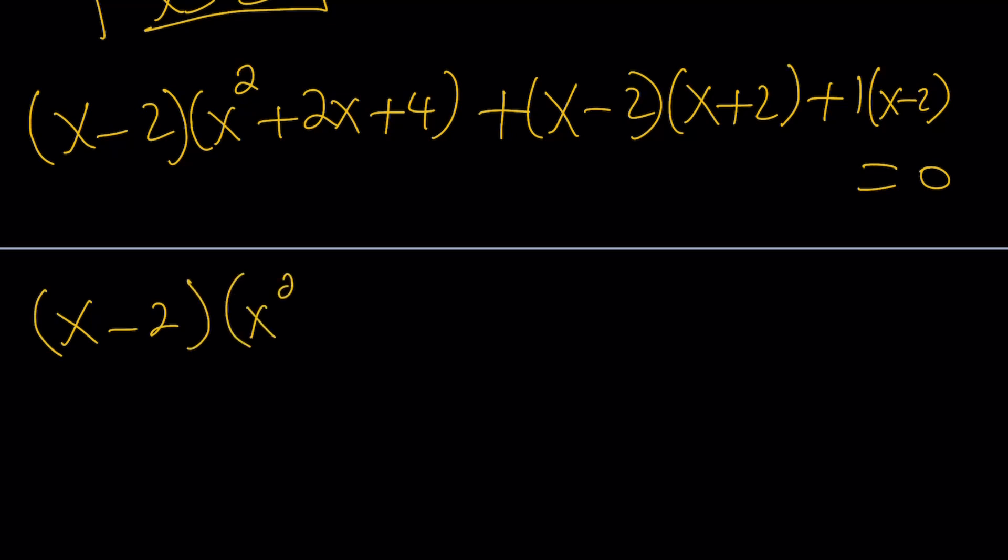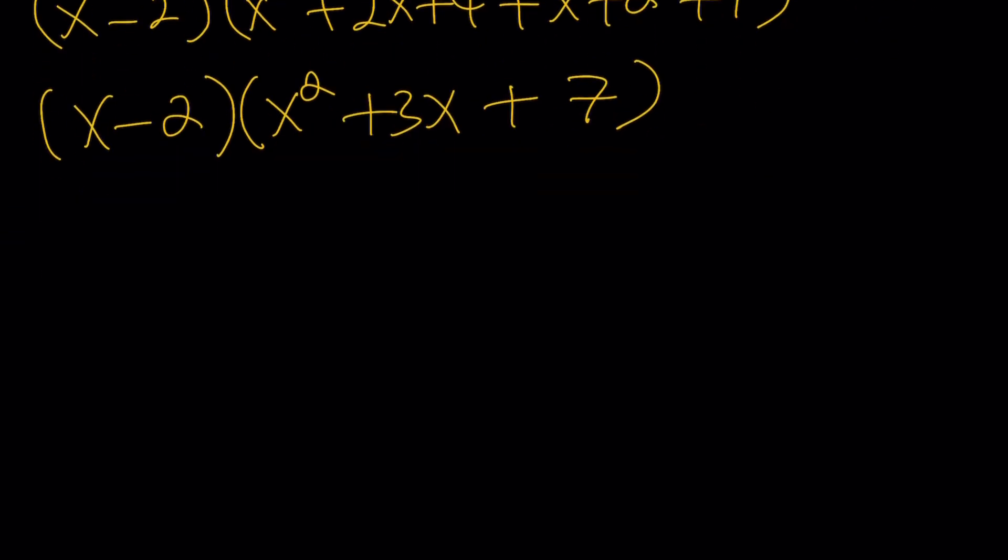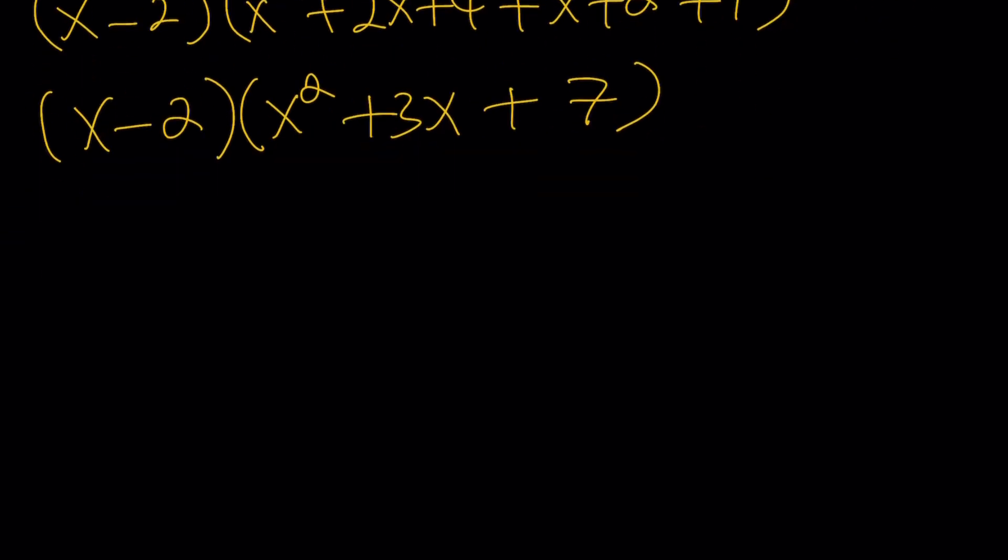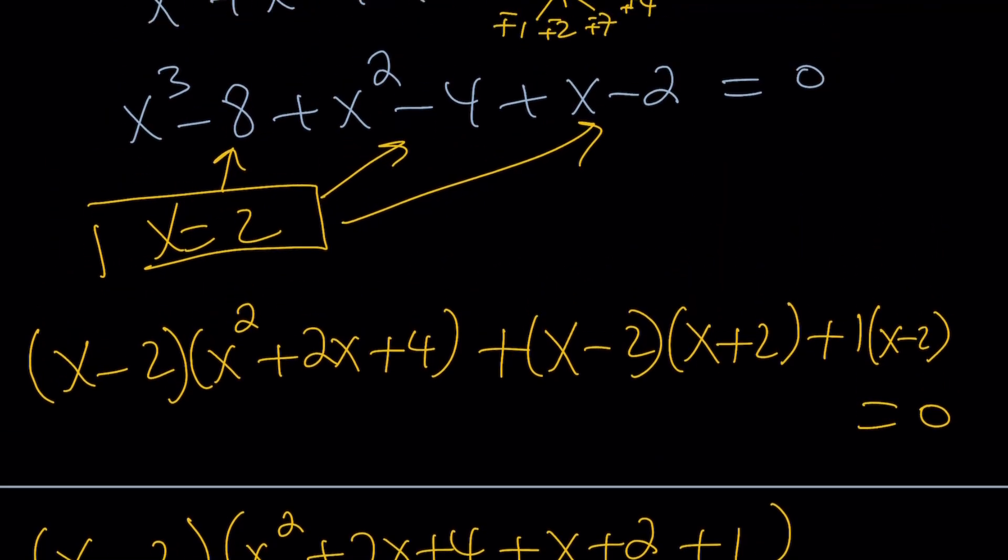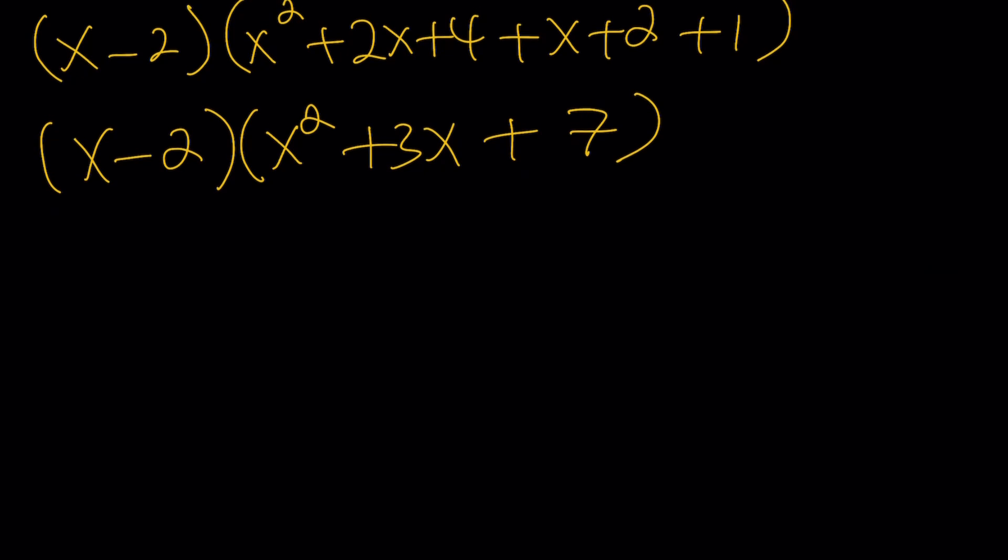If you take it out, you're going to end up getting x squared plus 2x plus 4 plus x plus 2 plus 1. Let's go ahead and simplify the second factor. So, here's the thing. Once you get x minus 2 as a factor because you know x equals 2 is a solution, that means by factor theorem, x minus 2 is a factor. The factoring process will be fairly easy.